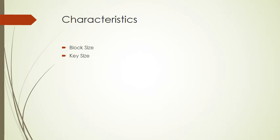Number of rounds: the essence of the Feistel cipher is that a single round offers inadequate security, but that multiple rounds offer increasing security. A typical size is 16 rounds.